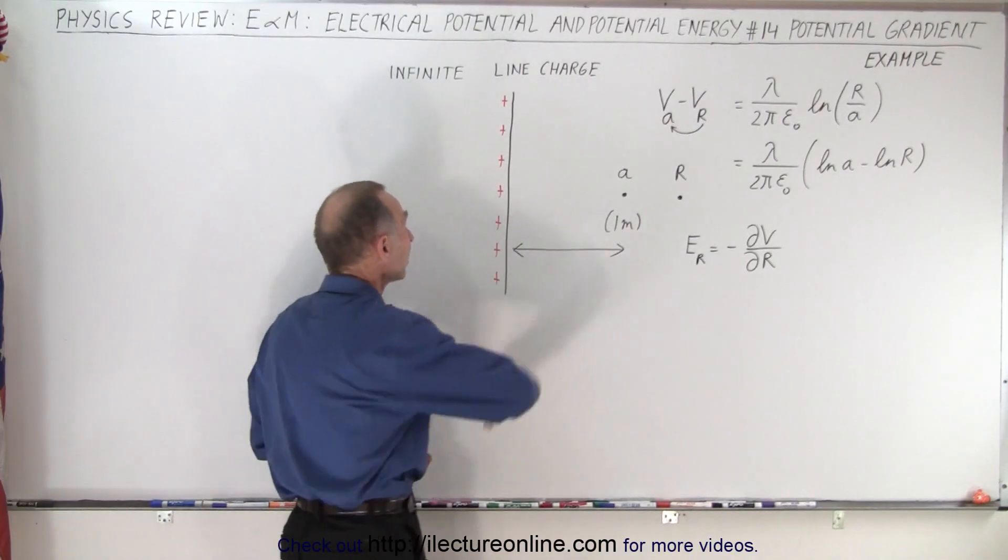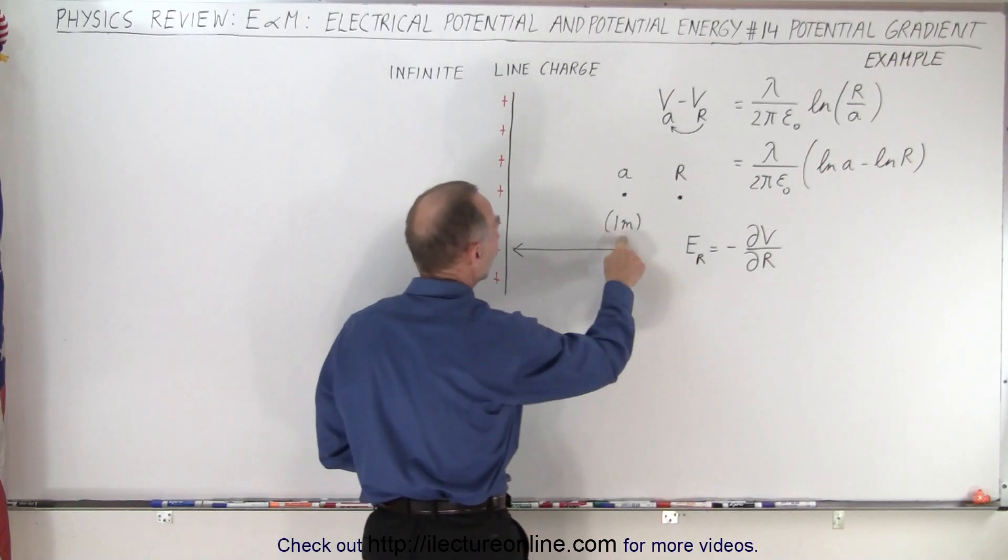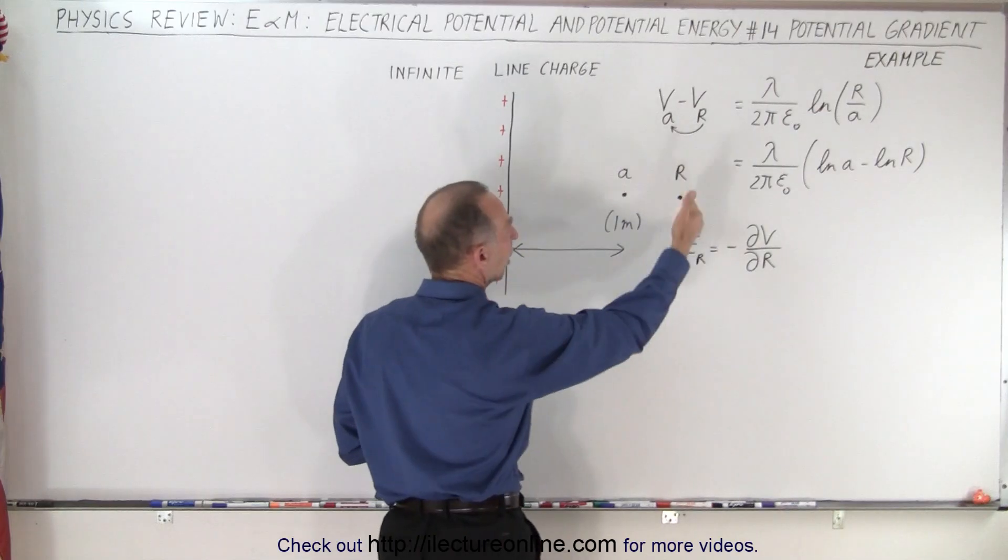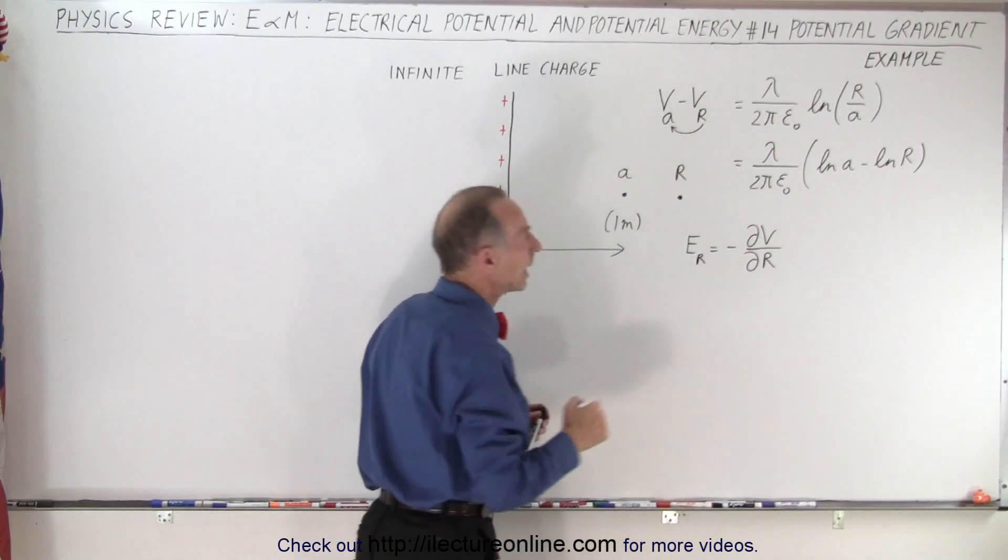We're going to take an infinite line charge. We'll pick a point a distance one meter away, call that point A. That's a fixed point A. And then some arbitrary point R farther away than A.